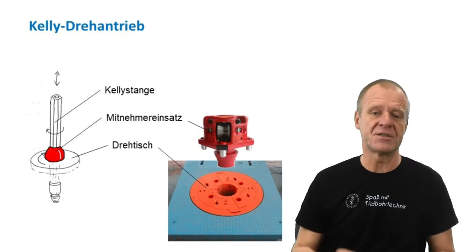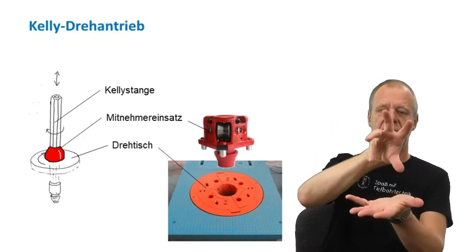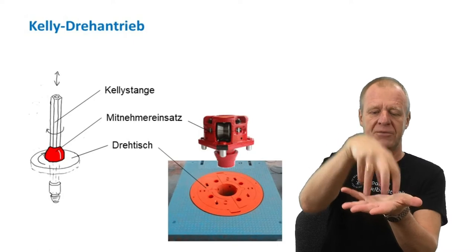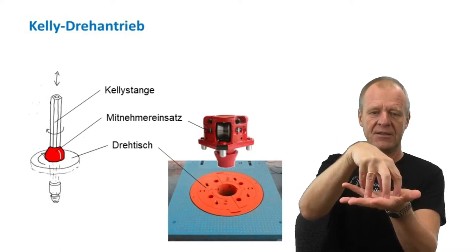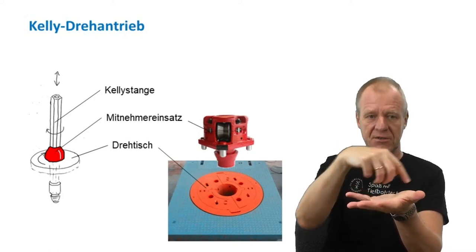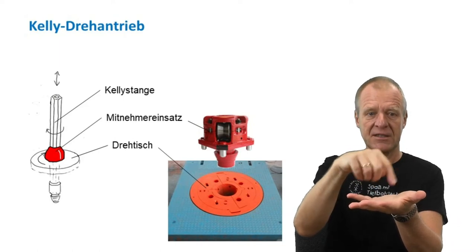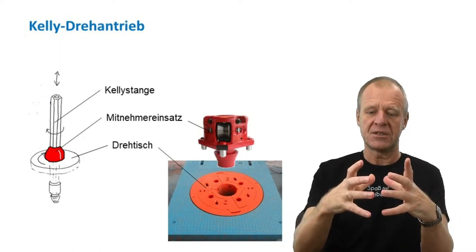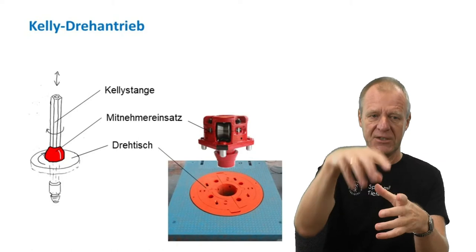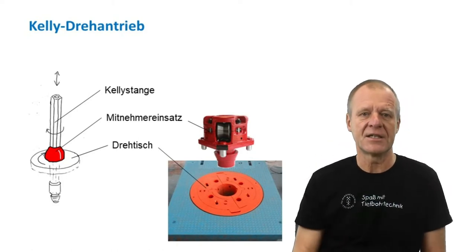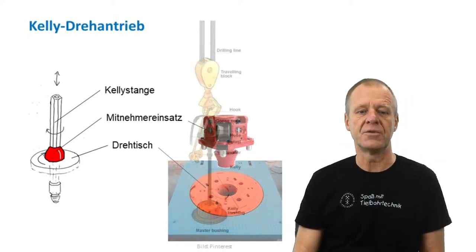As you see in the picture, the Kelly bushing has four bolts on the lower side, and these bolts fit into four dedicated holes in the rotary table. When the rotary table turns, the Kelly bushing turns along with it, and the bushing forms a hexagonal opening where the Kelly rod fits in and moves easily up and down.